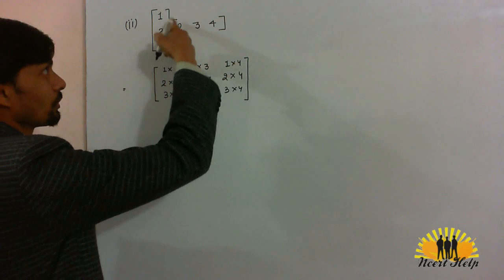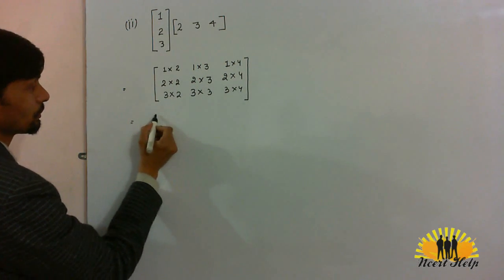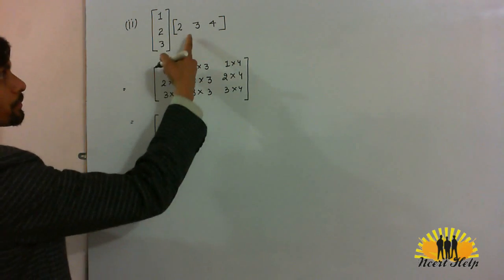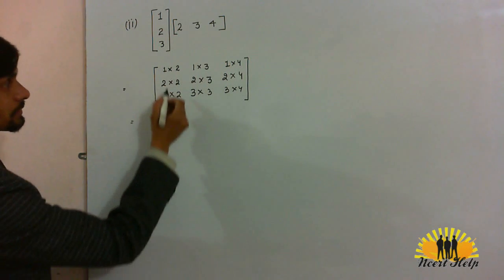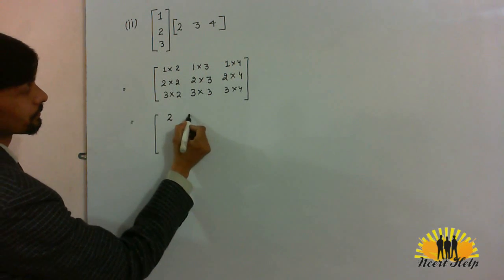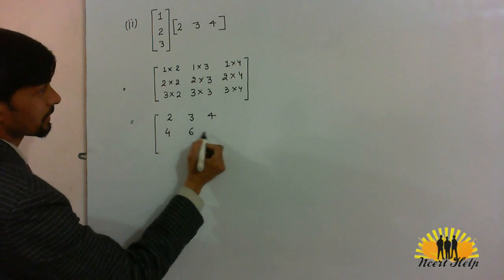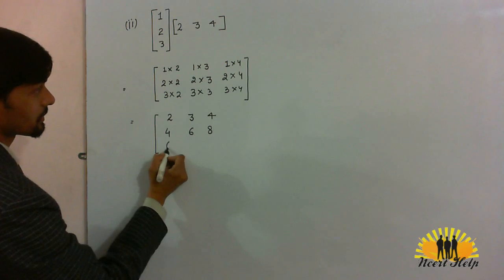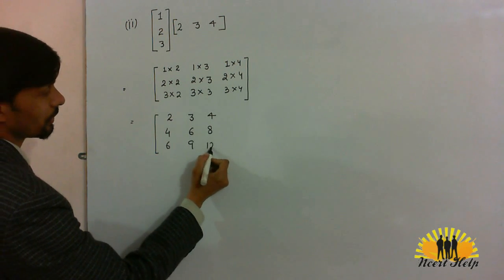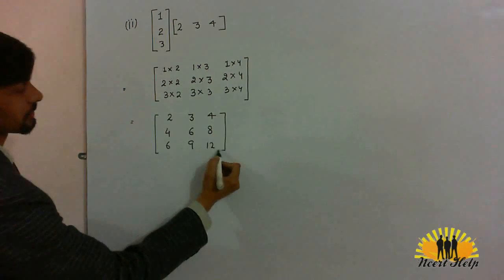The logic is row by column. So, the result of the product of these two matrices is 2, 3, 4, 4, 6, 8, 6, 9, 12. This is our desired answer.